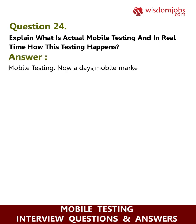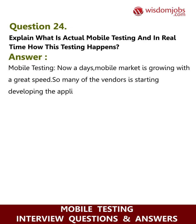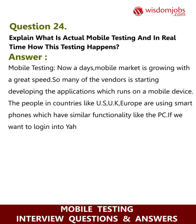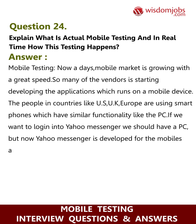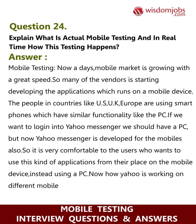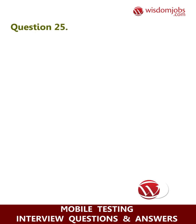Question 24: Explain what actual mobile testing is and how this testing happens in real time. Answer: The mobile market is growing at great speed, so many vendors are starting to develop applications that run on mobile devices. People in countries like the US, UK, and Europe are using smartphones with functionality similar to a PC. For example, Yahoo Messenger, which previously required a PC, is now developed for mobile as well. Testers need to verify how such apps work across different mobile phones and how the UI should be tested.